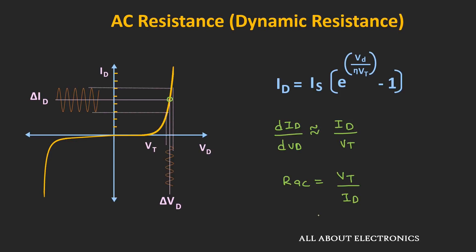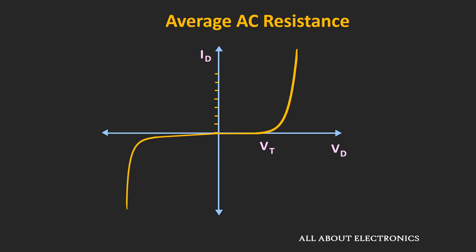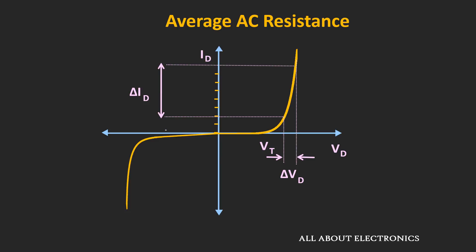So far in our discussion, we have assumed the applied AC signal is very small. But if the applied AC signal has a very large voltage swing, then the resistance offered by the diode is known as the average AC resistance. If a large AC signal is applied to the diode causing a large voltage swing, the variation in voltage is ΔVd and the variation in current is ΔId. The diode resistance can be found by connecting the two extreme points of operation, and the inverse of the slope of that line represents the average AC resistance.